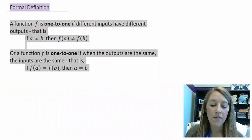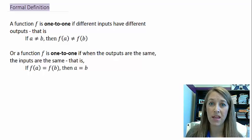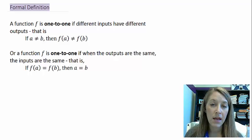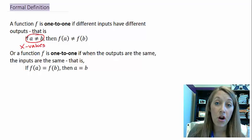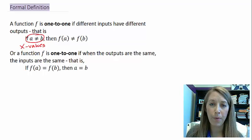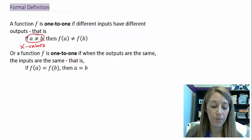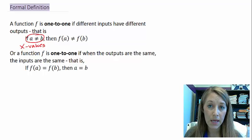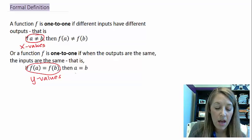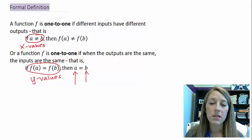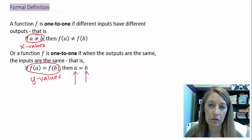Let's look at the formal definition of a one-to-one function. If a function is one-to-one, then different inputs must have different outputs. That means if you have two x-values that are not the same — say a and b — then f(a) and f(b) cannot be the same; there can be no duplication. A different way to state this: if the outputs f(a) and f(b) are equal, then the inputs a and b must also be equal. Depending on what you're trying to do, one form of the definition may be easier to use than the other.